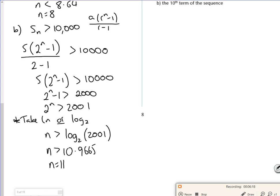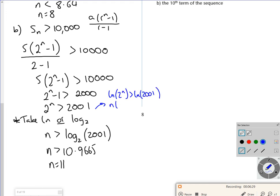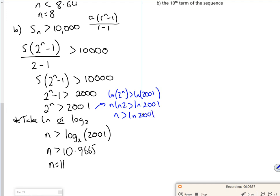If you didn't take log to base 2, which most people wouldn't, you'd have something which was log 2 to the n greater than log 2001. So n log 2 greater than log 2001. n greater than log 2001 over log 2. So it's not too much work either way to do.